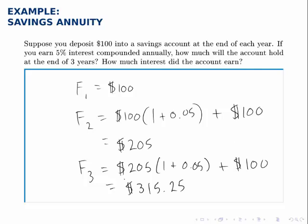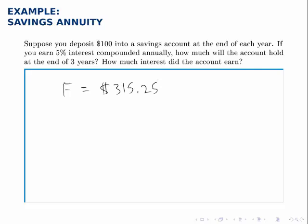So we've answered the first question that the account holds $315.25 at the end of three years. The second question though asks how much interest did the account earn? So to think about this, we think about how much we deposited and everything beyond that is interest. Now if we made a deposit three times, once at the end of each year, and each deposit was $100,